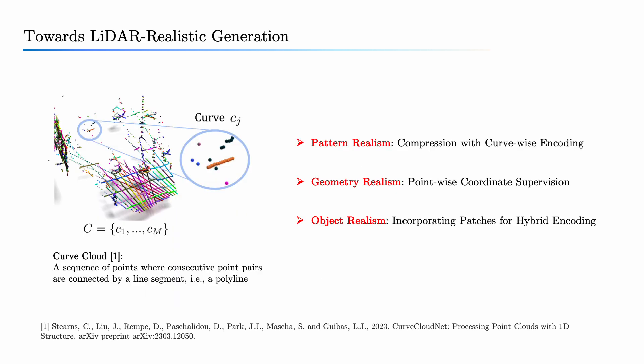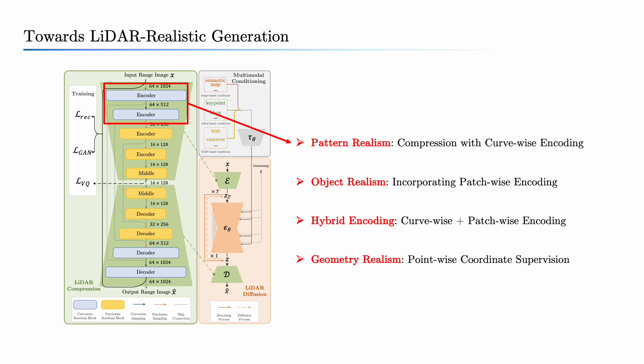The presence of curves is a common pattern in LiDAR scenes, as mentioned in previous work. To maintain pattern realism, we introduce curve-wise encoding during LiDAR compression, preserving curve-like structures in the perceptually equivalent space.